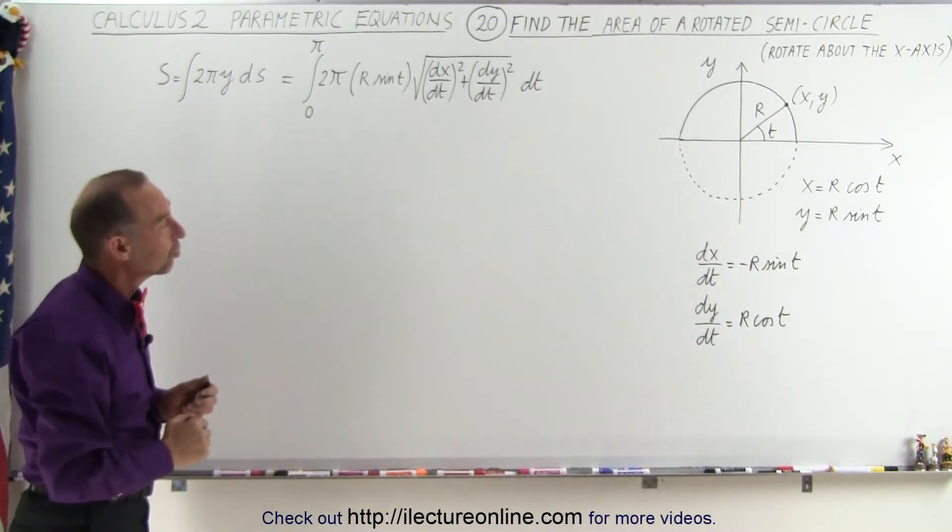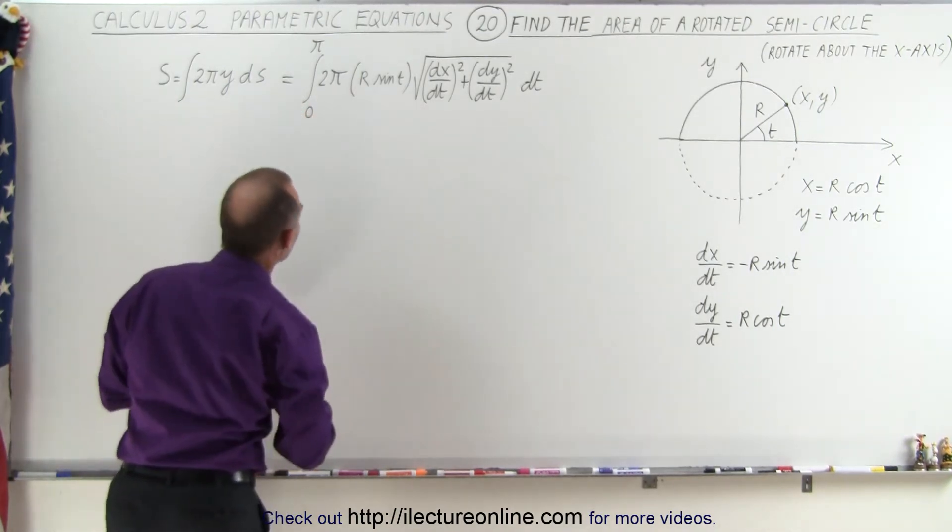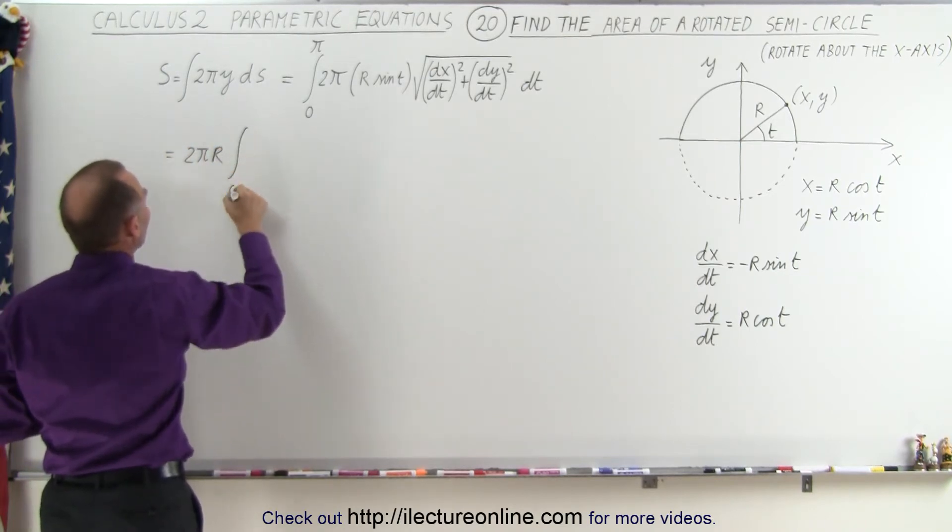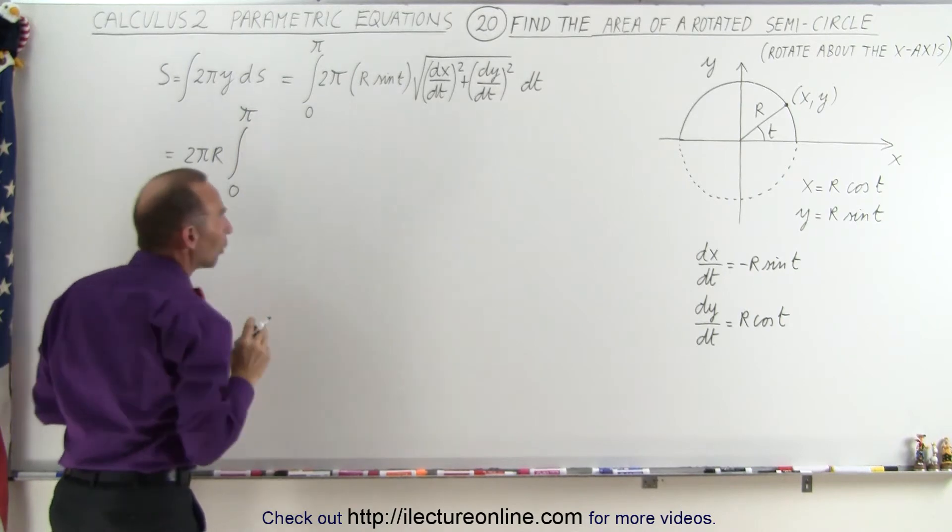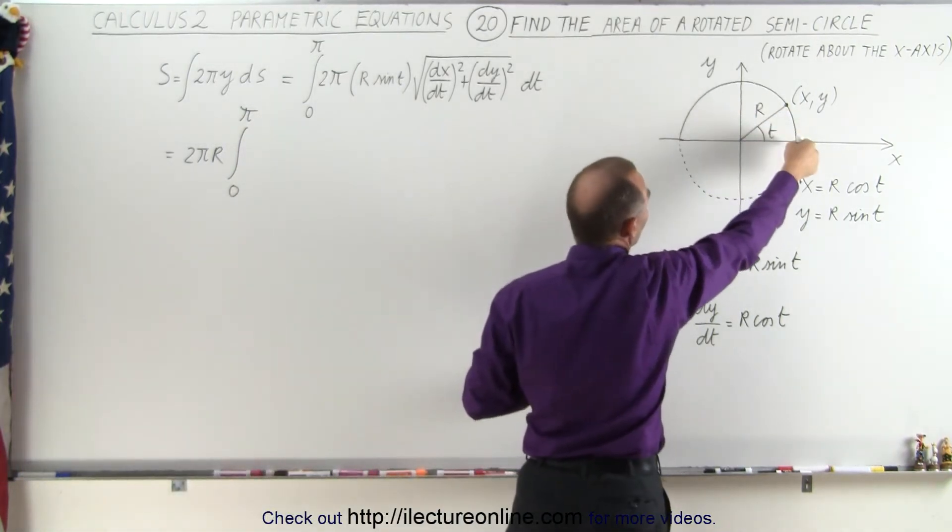So that's where we're going to start. Now we've moved the 2πr outside the integral. This becomes equal to 2πr times the integral from 0 to π. The reason why we only go from 0 to π is because we're rotating a semicircle. The angle starts at 0 and goes all the way to π and then we rotate that around.